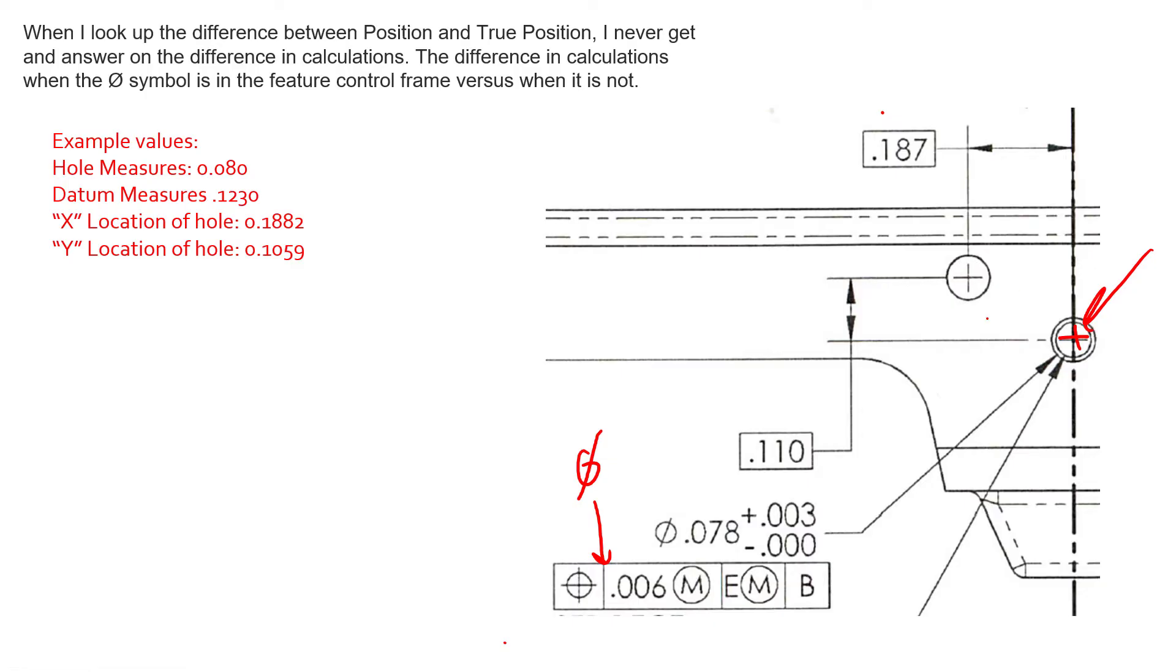Then we go ahead and center the position tolerance on that true position. So we have a six thousandth diameter tolerance zone centered at true position. And so this is truly the position symbol. A lot of people call it the true position symbol, but it's technically the position symbol, which gives us the position tolerance.